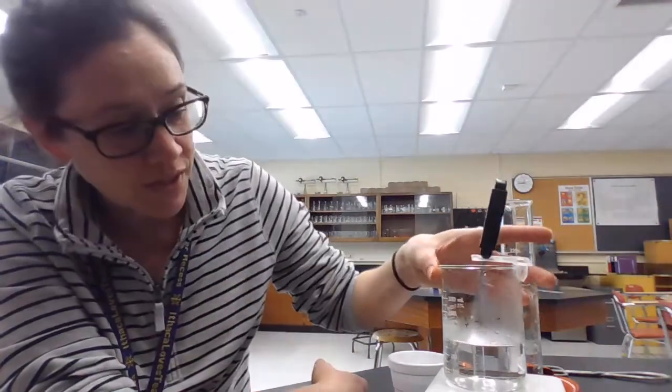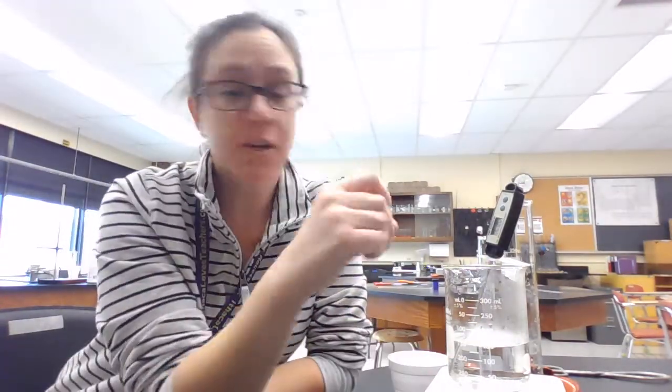Okay, here is some data for the heat of fusion of ice lab. So the first thing you're supposed to do is heat 120 milliliters of water to about 50 degrees. Now this is more than 120, we've got like 150 in here or so. It doesn't really matter as long as it's more than 100, because what you want is 100 milliliters of warm water. So you want to heat more than you need just in case.